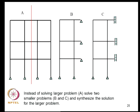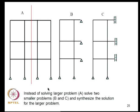This is illustrated for a multi-story building frame that may require 500 degrees of freedom. Using the plane of symmetry, we analyze two problems each with 250 degrees of freedom and synthesize the solution for the built-up system. Instead of solving a larger problem A, we solve two smaller problems B and C and synthesize the solution—this is another way of utilizing problem features to achieve model reduction, applicable only when such symmetries exist.